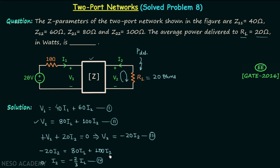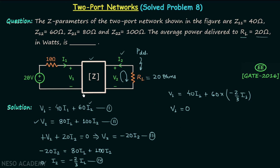Moving on to the next step, we will substitute I2 from equation number 4 into equation number 1. Therefore voltage V1 equals 40 I1 plus 60 multiplied by minus 2 over 3 I1. When you simplify this, you will find voltage V1 is equal to 0. We are doing all these calculations to find current I2, because once we have I2 we can find the power delivered as I2 squared multiplied by the load resistance.